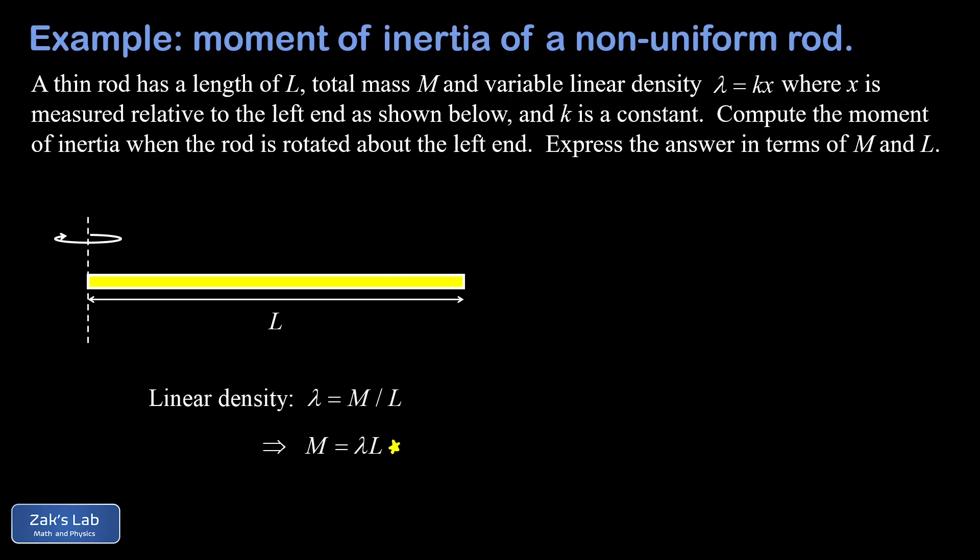So the next thing we do is slice this rod into point masses. And there's a representative point mass sitting at distance of x from the rotation axis. We call the mass of this thing dm, and we call the width of it dx.